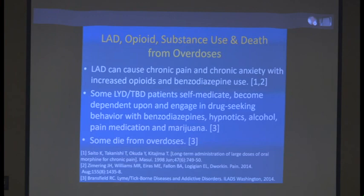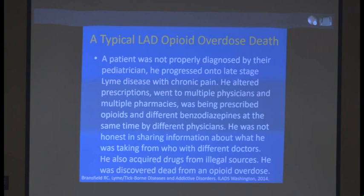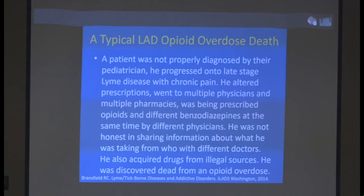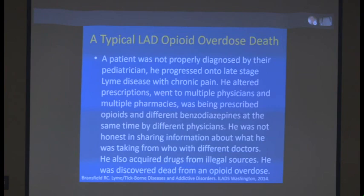A typical case: a person was never diagnosed by their pediatrician, so it may be a young person who progresses to late-stage disease because the diagnosis was missed. They have chronic pain — anhedonia, psychic pain, or physical pain. They go on pain meds, order from multiple pharmacies, get drugs from illegal sources. Then they do better for a short period of time, their tolerance to opioids diminishes, they have a fight with their girlfriend, relapse, take the dose they used to take — which is now an overdose — and are discovered dead.